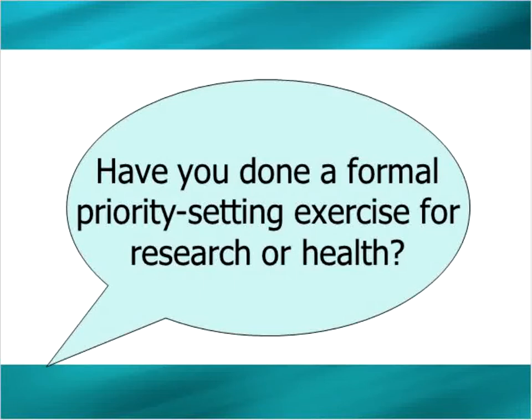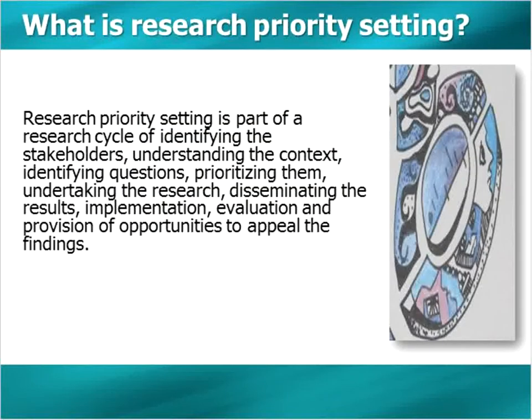We also have priorities every day — for example, which email will we answer first? But what does priority setting mean in a research context? Research priority setting is part of the research cycle of identifying stakeholders, understanding context, identifying questions, prioritizing those questions, actually conducting the research, disseminating results, and then looking at implementation, whether findings are being taken up in practice, evaluation, and provision of opportunities to appeal the findings.